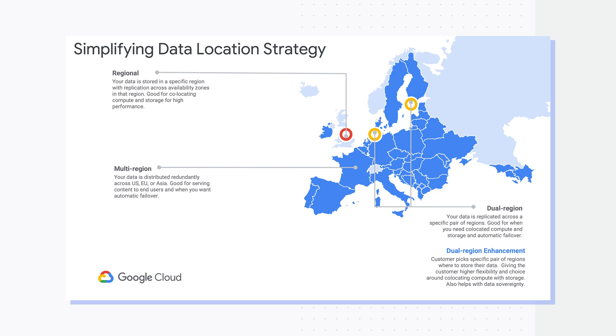Lastly, for dual region, it is a specific pair of regions chosen by yourself — for example, Tokyo and Osaka. You should choose dual region when you want similar performance advantages as regional, but also want higher availability that comes from being geo-redundant. Sounds like multi-region and dual region are both geo-redundant storage. Can you help with specifics on when to go for dual region over multi-region? Sure. Multi-region is great for customers who want to push data outside of the Google network — use cases like content serving come to mind. When thinking about dual region, think customers looking for true active-active workloads and serving high analytical type workloads.